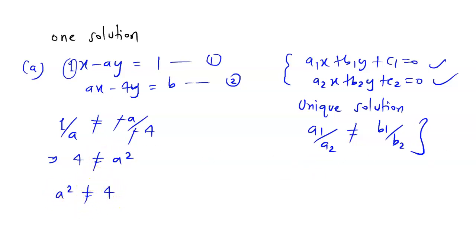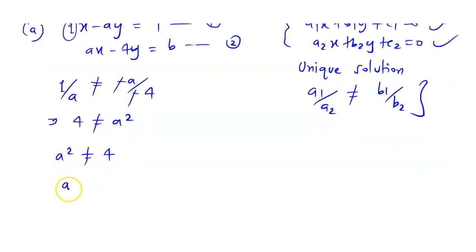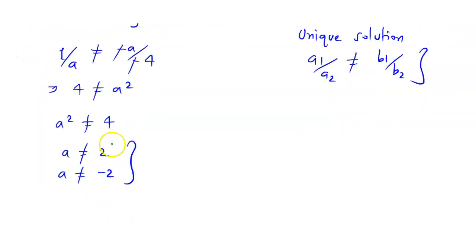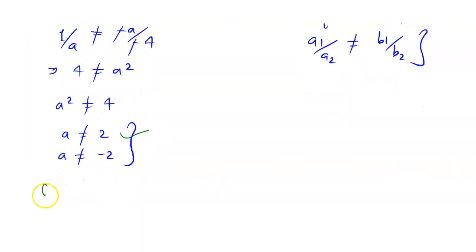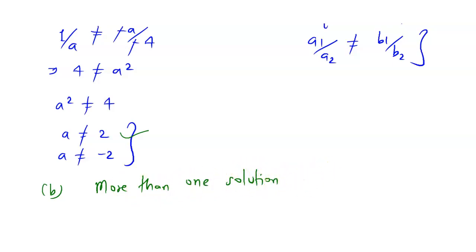So what are the values of a? We can say a is not equal to 2 and a is not equal to minus 2. Now let us talk about the second condition — more than one solution. This means two lines are overlapping on the graph.